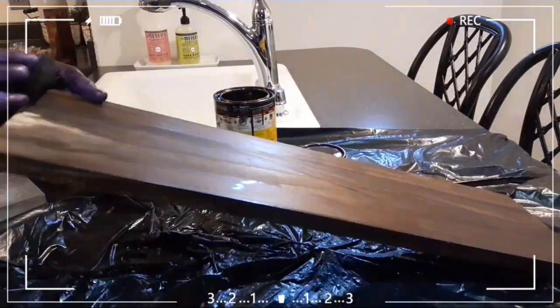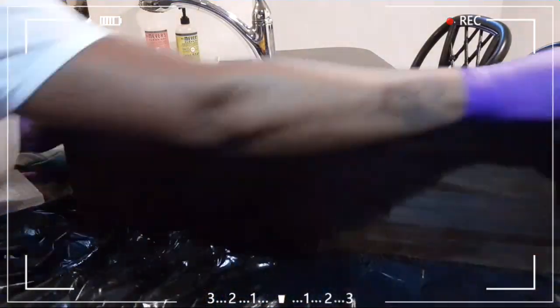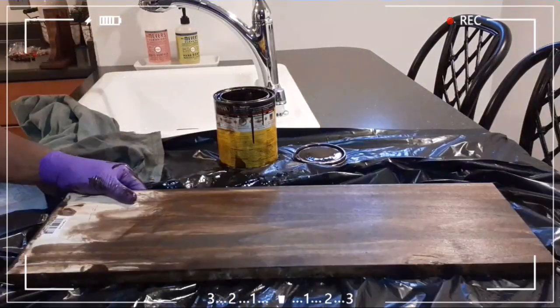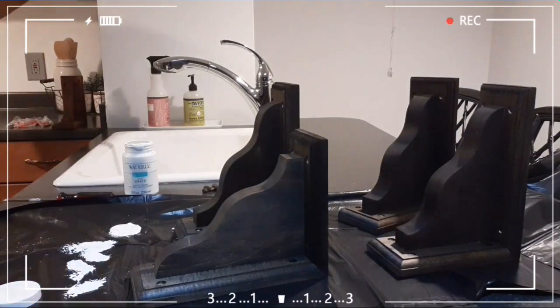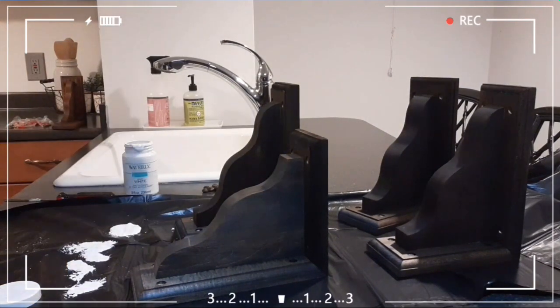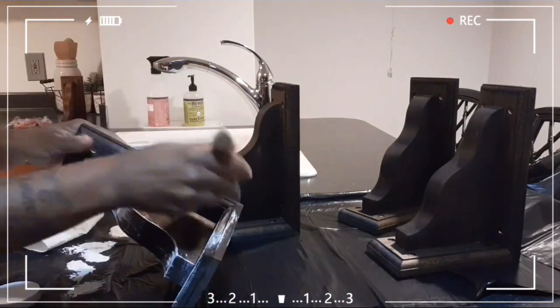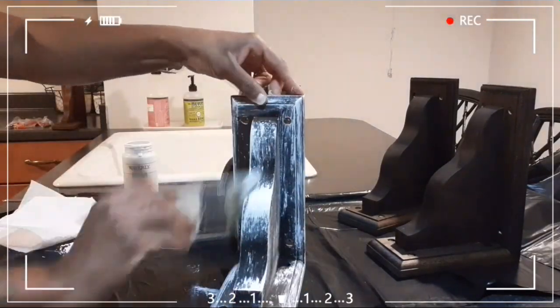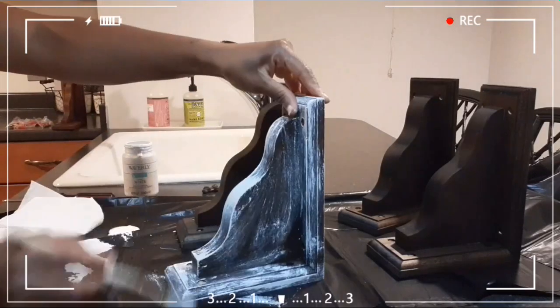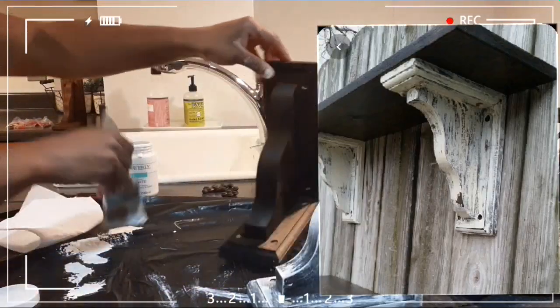So once I stained everything, I do remove that sticker because I didn't know it was there at first. Once I stained everything, I went ahead and just dry brushed my corbels with some Waverly chalk paint in white, and I did this to all of them. I'm gonna make sure I put the picture down below of my idea for these shelves that I got off of Pinterest.